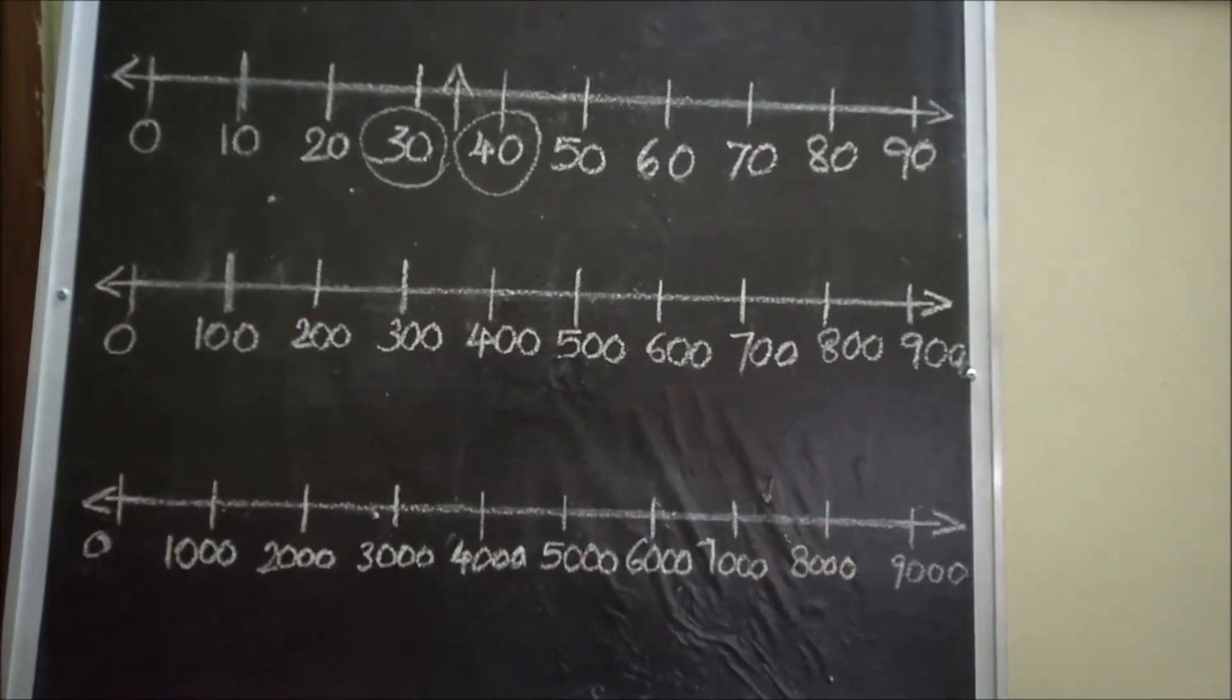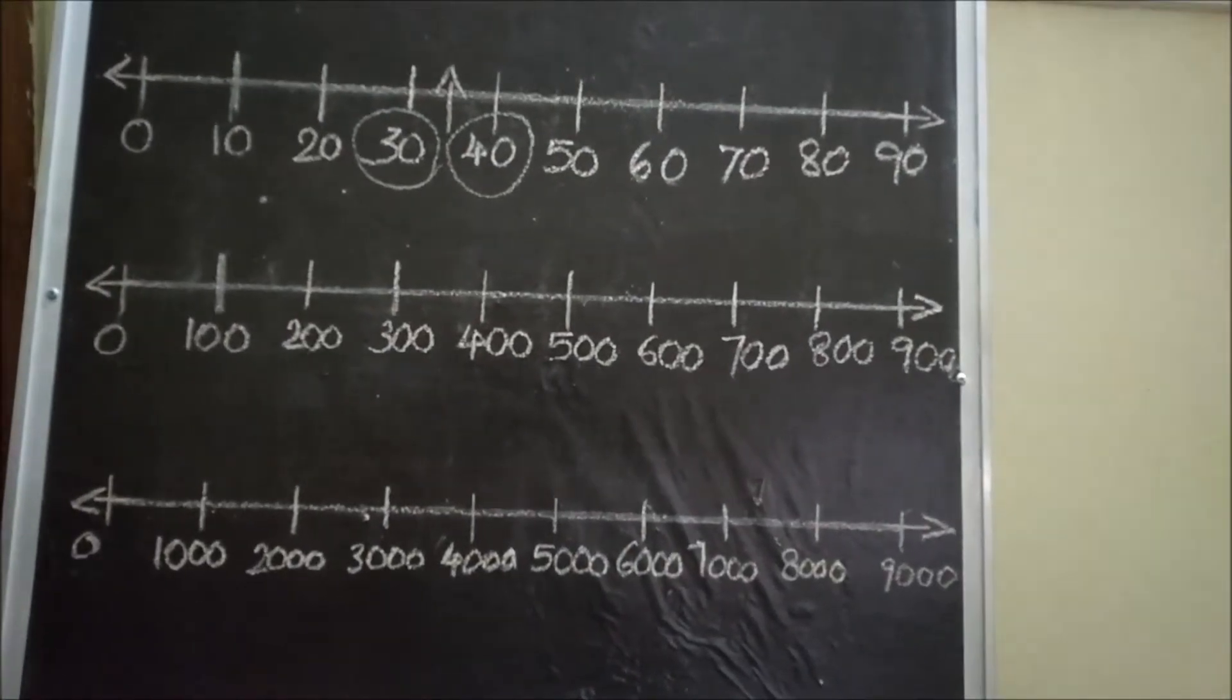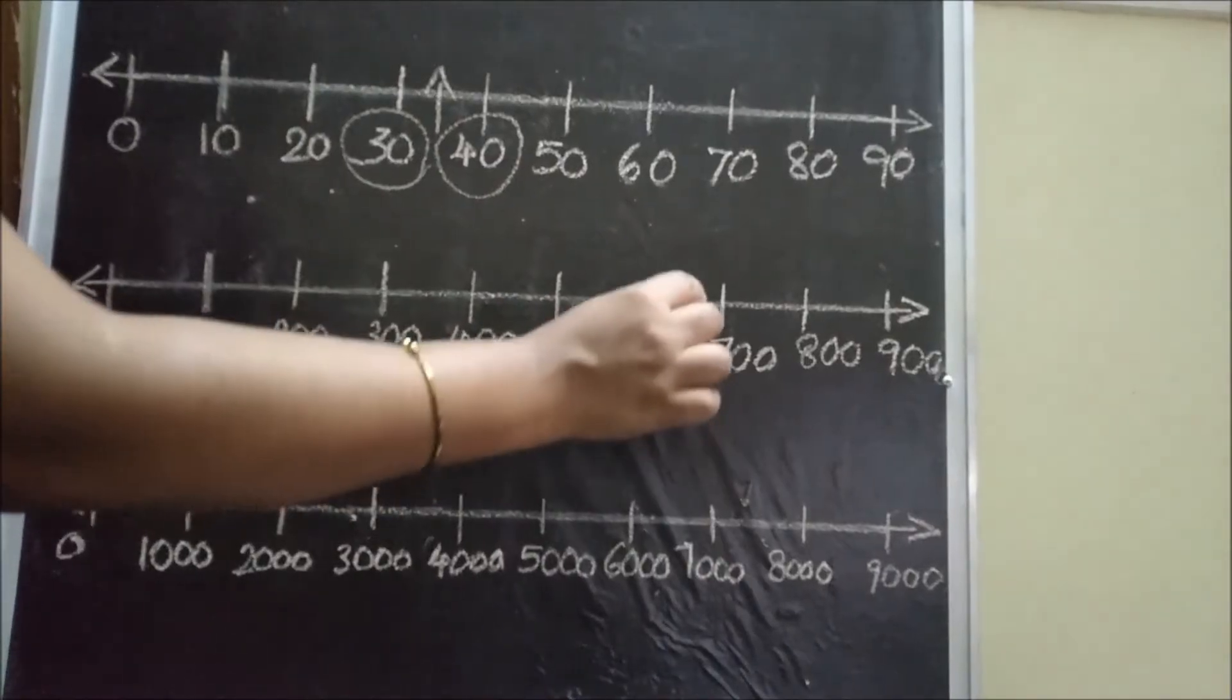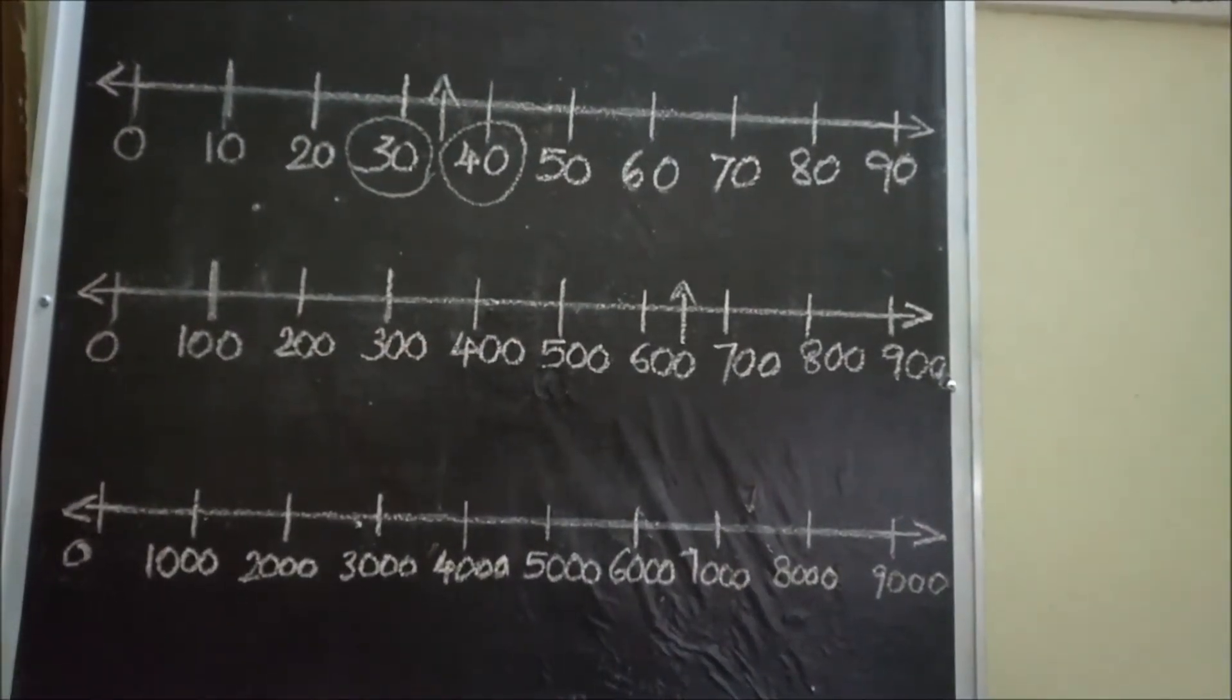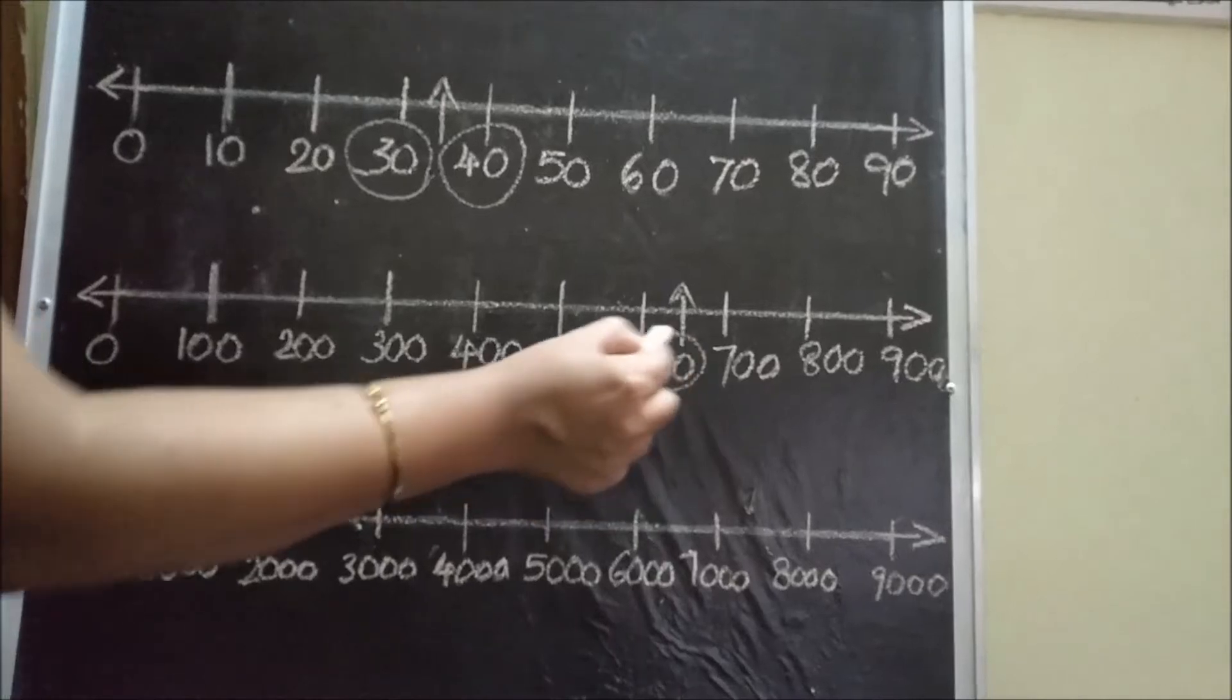When we estimate a number which is in between 600 and 700, it can become 600 or 700.